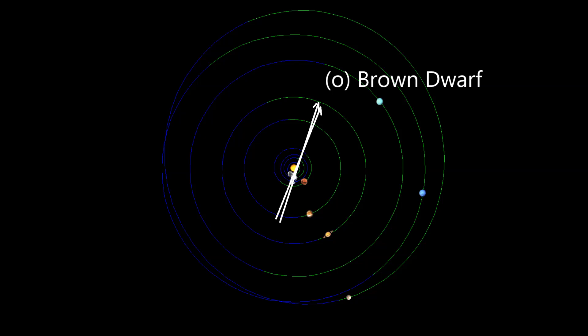Then when it squared up with where we thought this brown dwarf was, we experienced a rash of quakes once again. And so again, these quakes cannot be explained with the Jupiter alignment.